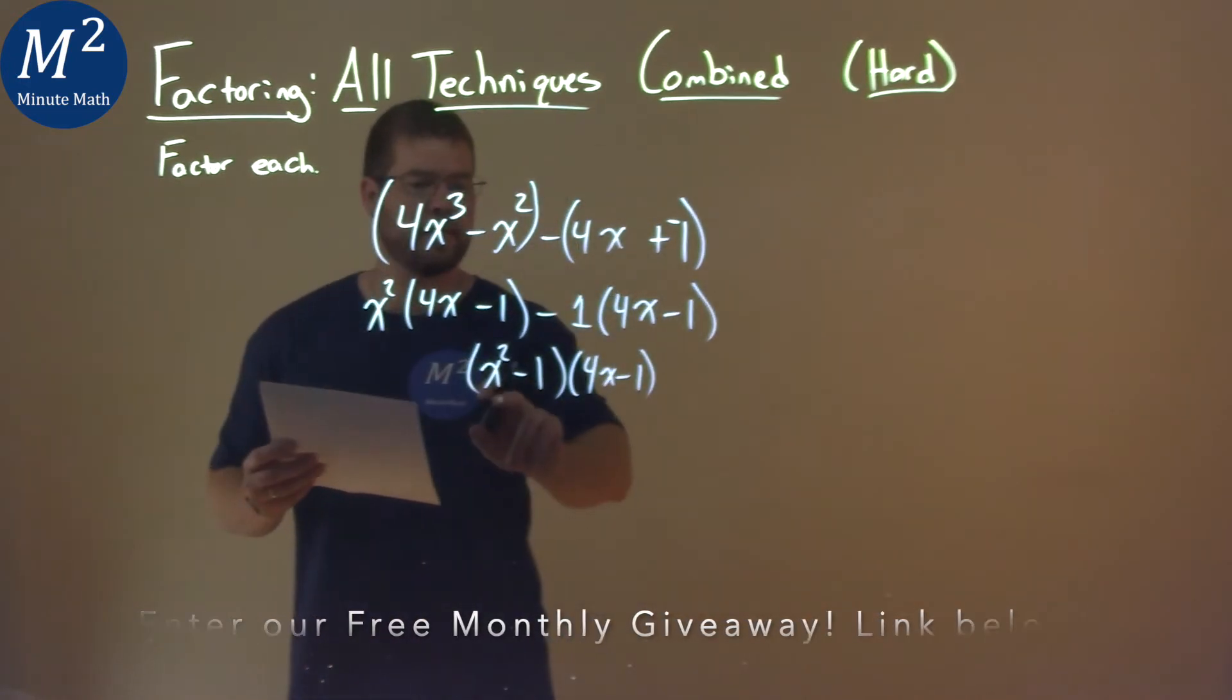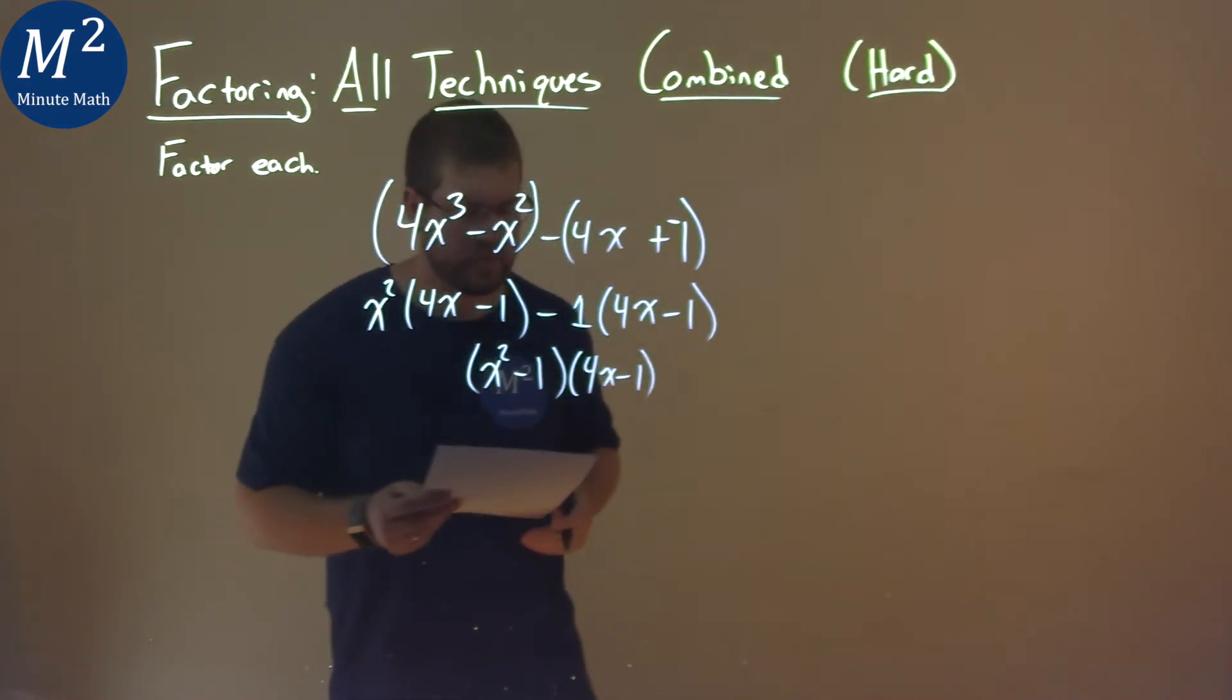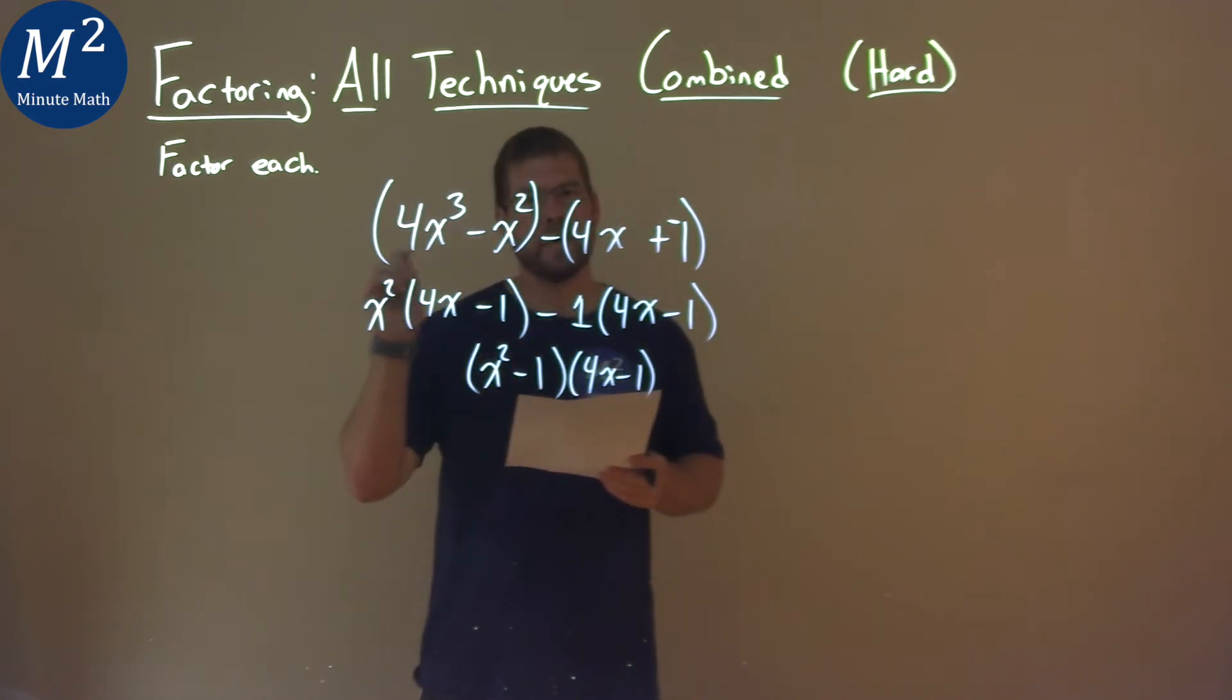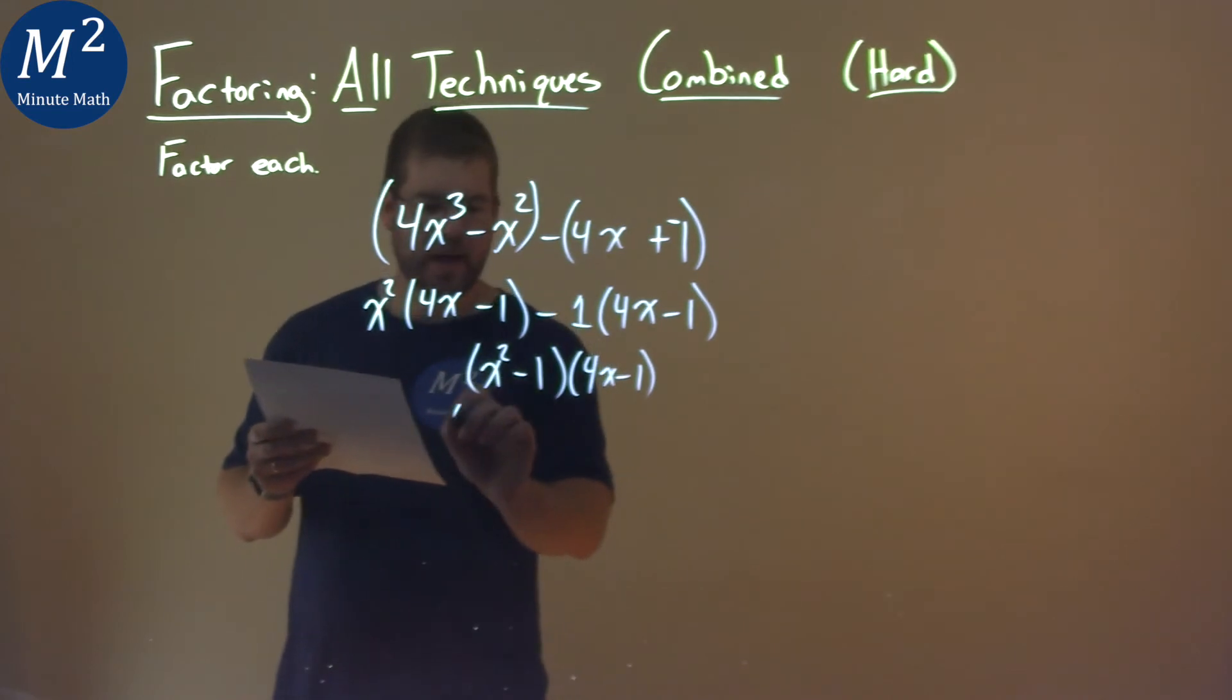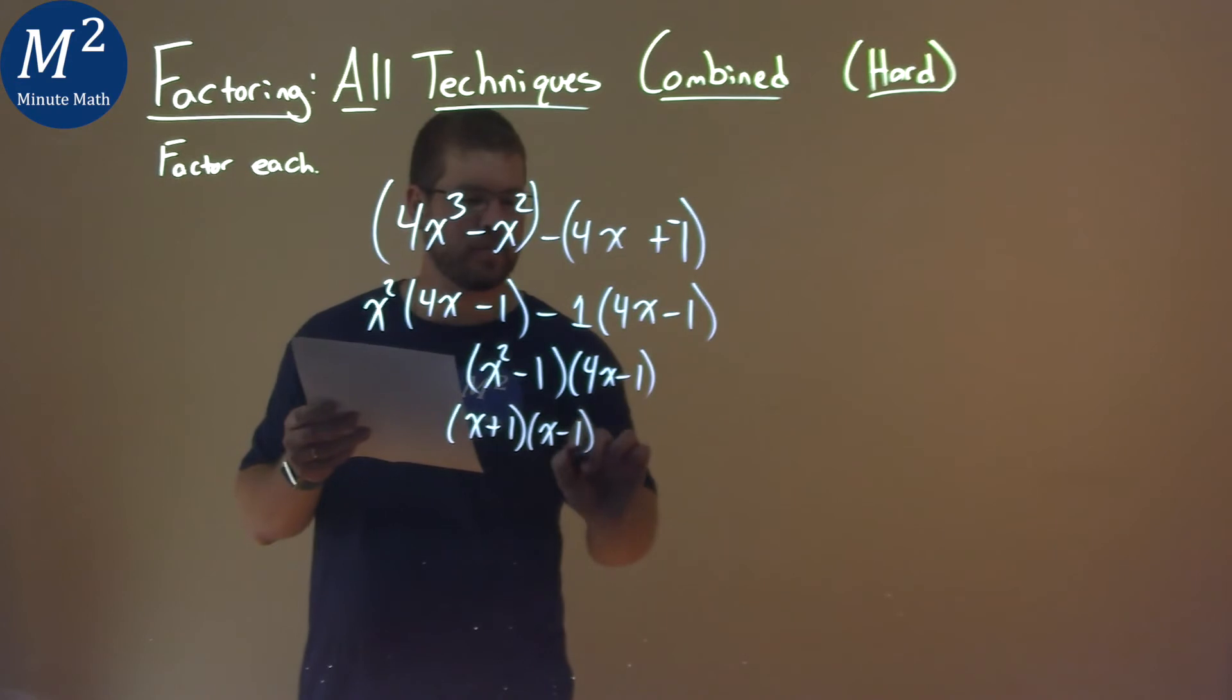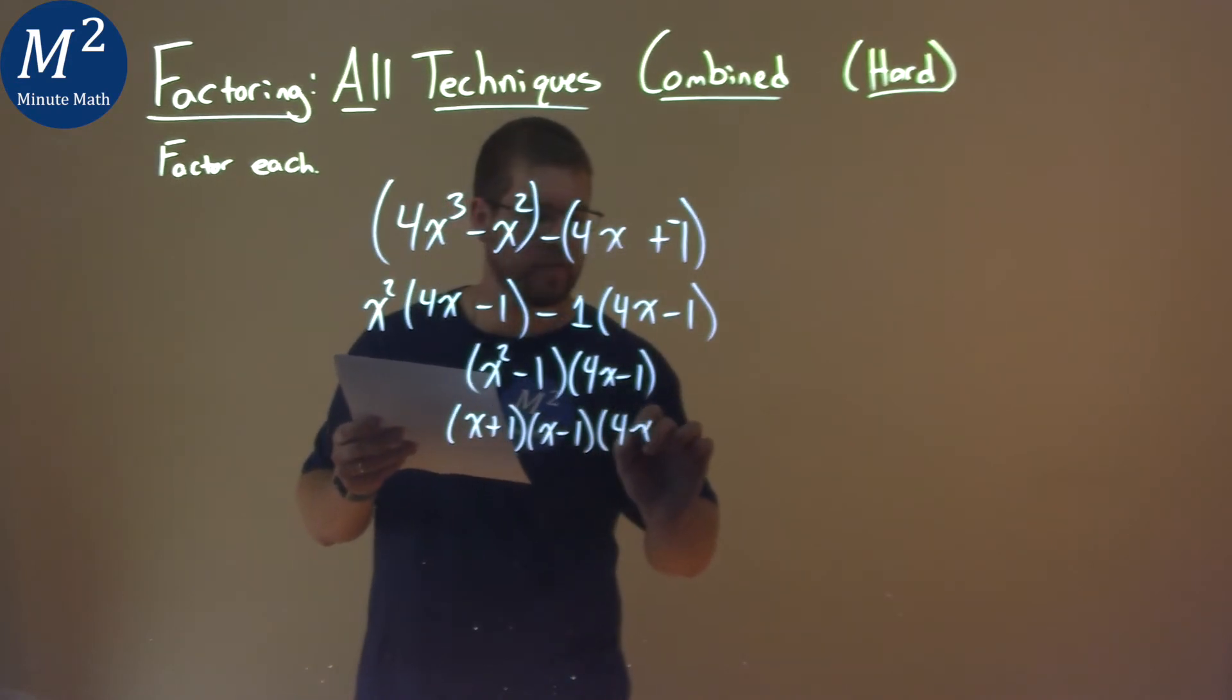Perfect. Bring that down, x squared minus 1 times 4x minus 1, but be careful, we're not done. x squared minus 1 can factor as well. That comes out to be an x plus 1 times an x minus 1. Bring down the 4x minus 1 here,